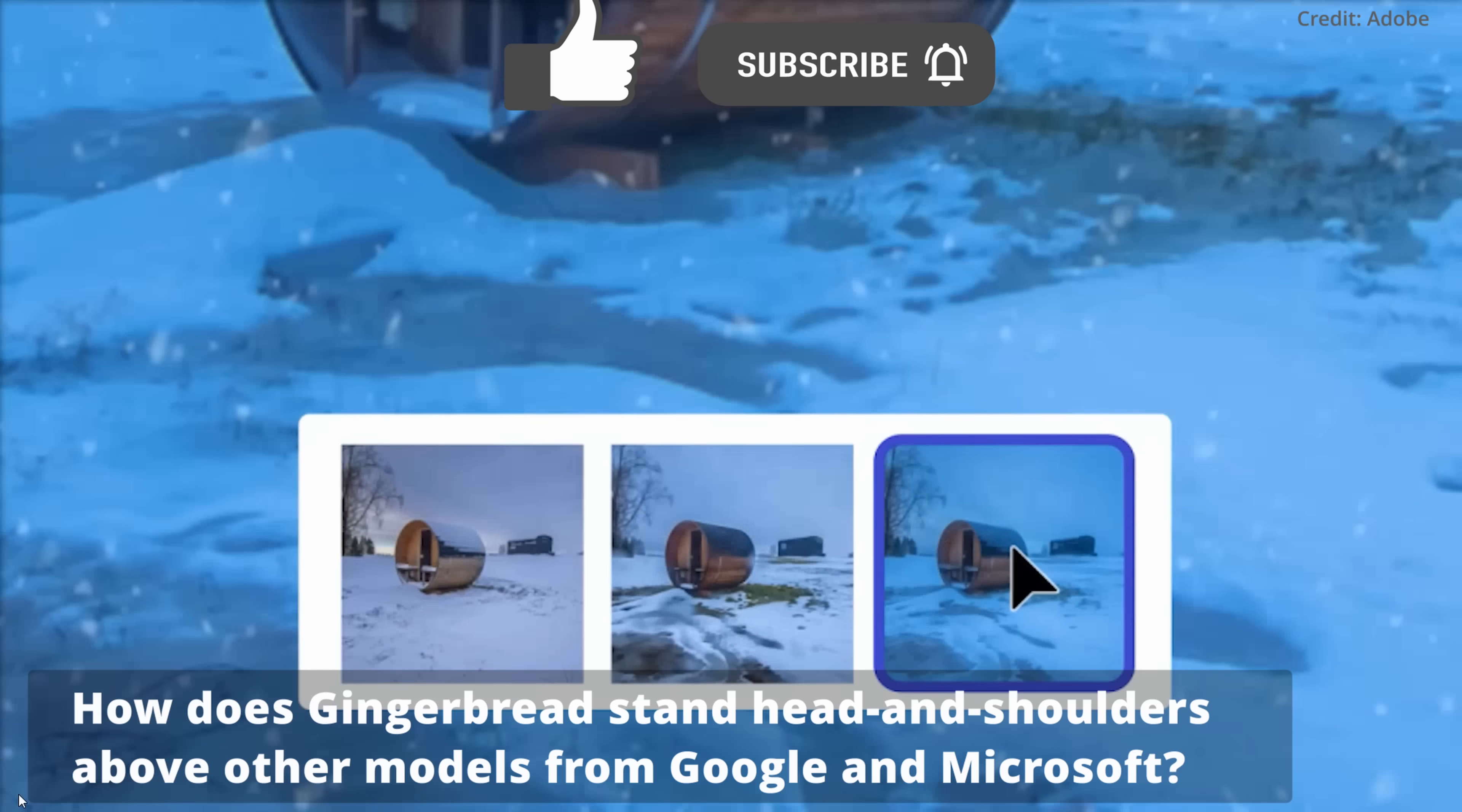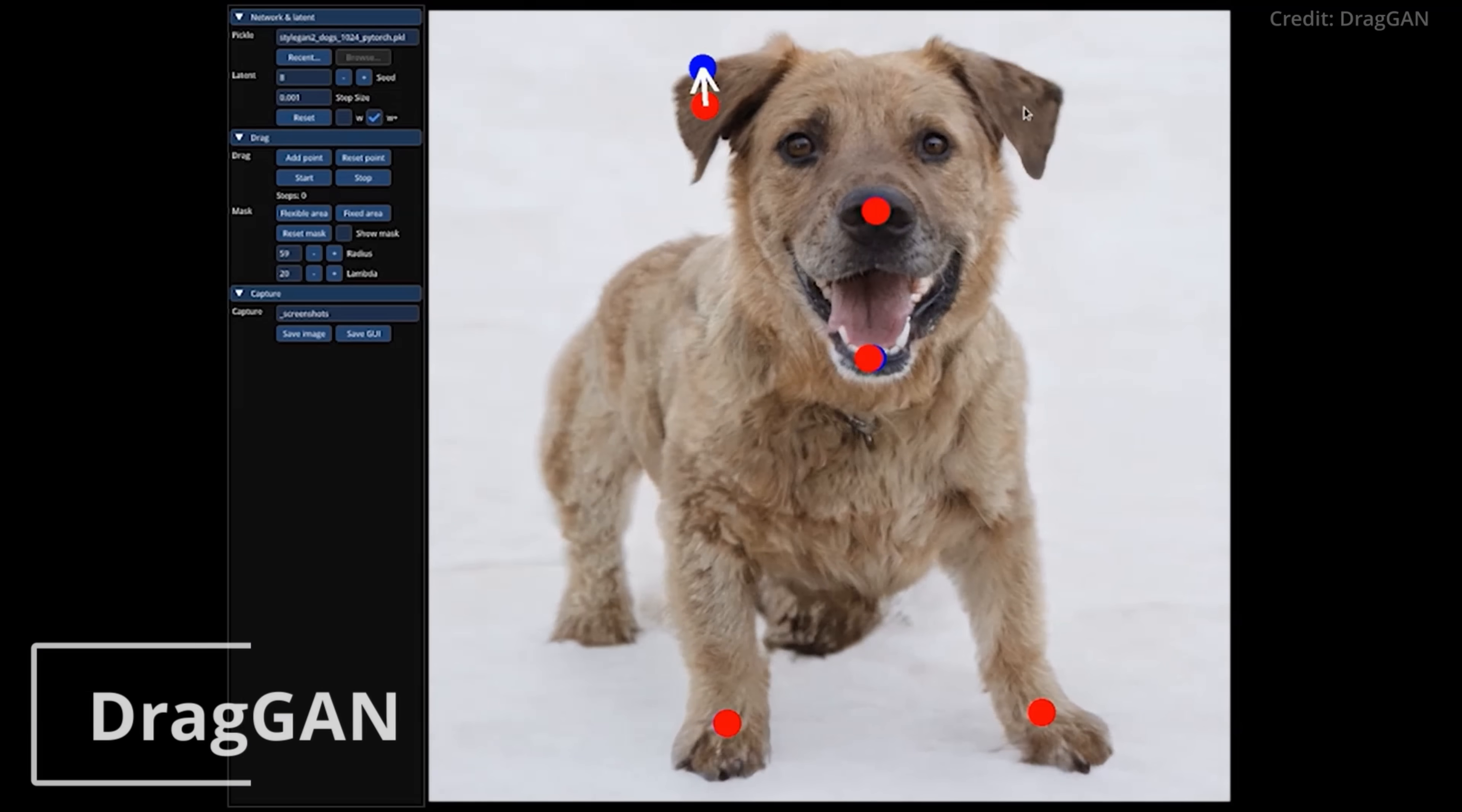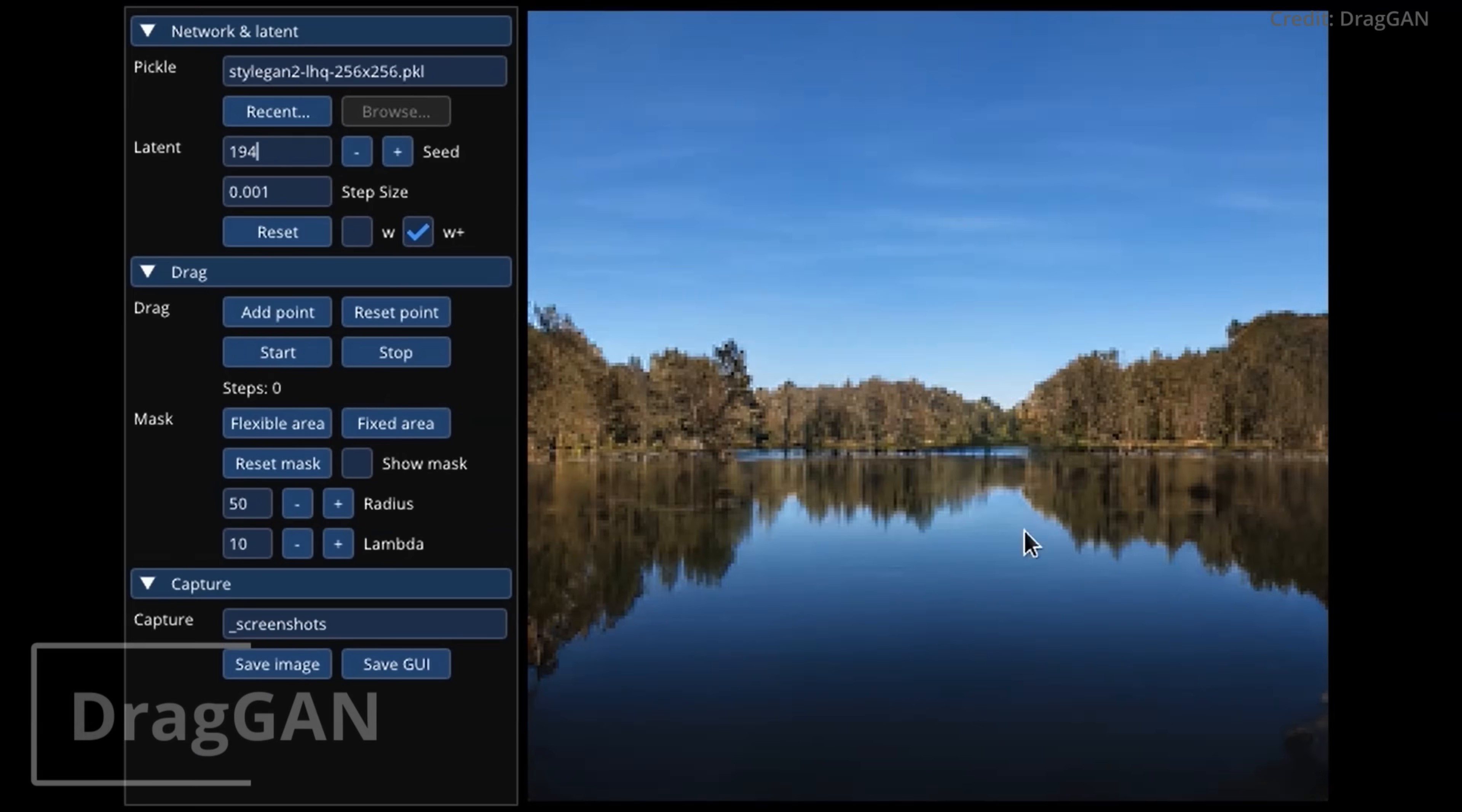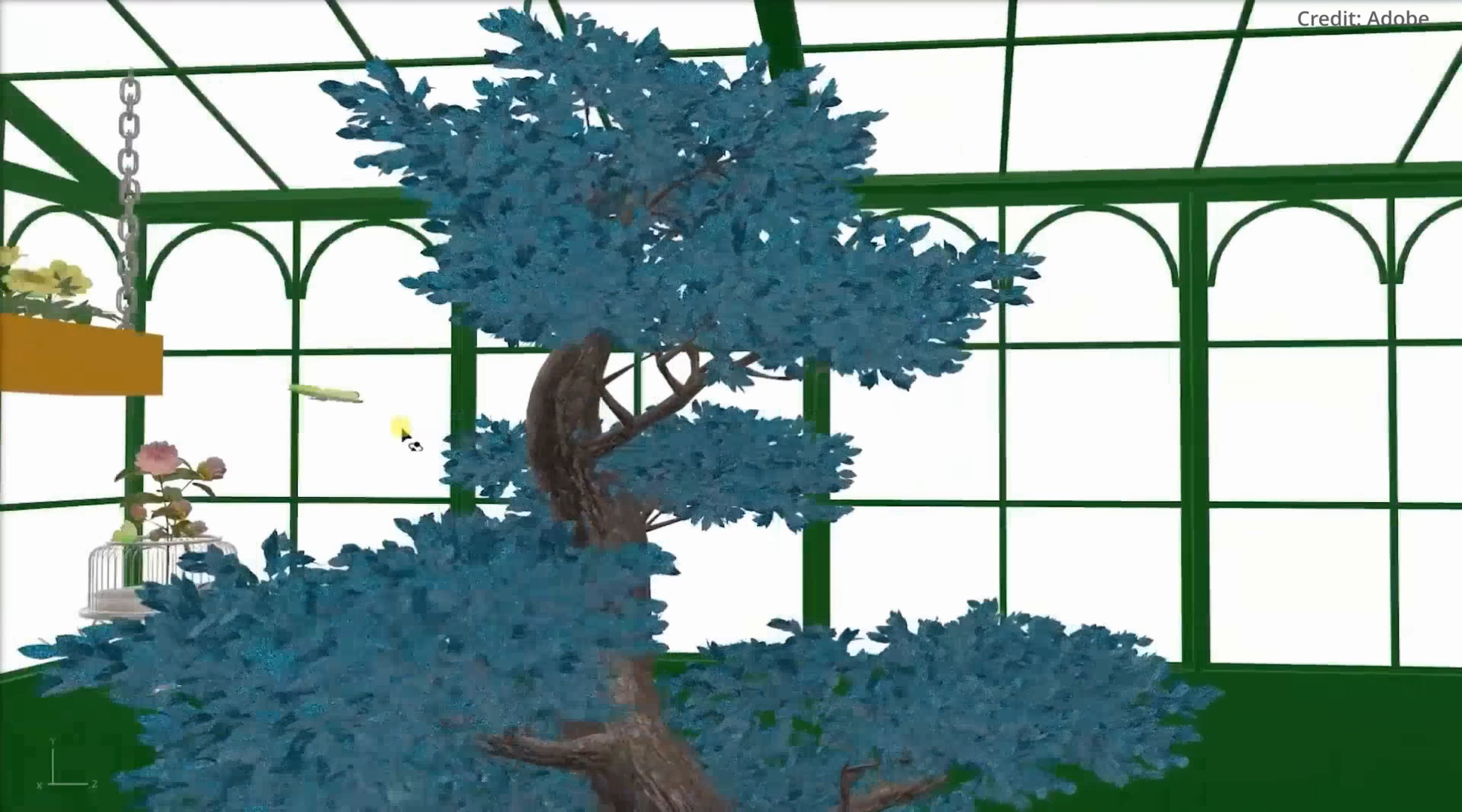But first, how does Gingerbread stand head and shoulders above other models from Google and Microsoft? Crucially, Midjourney only provides limited control to their customers, and although research projects like DragGAN have indicated the feasibility of precise AI image generation, and tools like Meta's MakerScene and Project Collision offer more control, none have managed to transcend the limitations of a research lab and break into the mainstream.